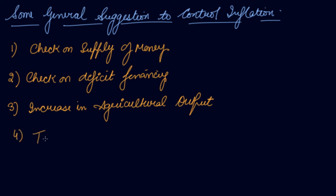Number four is tax increase. Increase the taxes so people will have less purchasing power and will demand less. If they demand less, there will be lower prices in the economy.